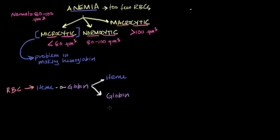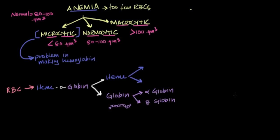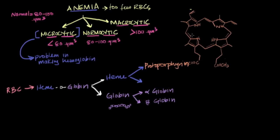Globin comes in two flavors inside hemoglobin: the first is alpha globin and the second is beta globin — the two main types of globin molecules inside hemoglobin. The second component of hemoglobin is heme, which itself has two components. The first is protoporphyrin — a very complex ring-shaped molecule. In the center of that ring there's a space reserved for the second component of heme, which is iron.